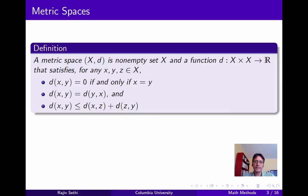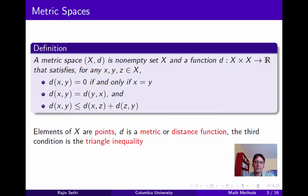A metric space is a non-empty set x and a function d that we'll call a metric or a distance function, and this function satisfies three properties. The distance between two points x and y is zero if and only if they are the same element of x. The distance between x and y is equal to the distance between y and x. And the distance between x and y is less than or equal to the sum of the distances between x and z and z and y, for any three elements x, y, and z in the set x. We'll refer to the elements of x as points, d as a metric or distance function, and the third condition as the triangle inequality.